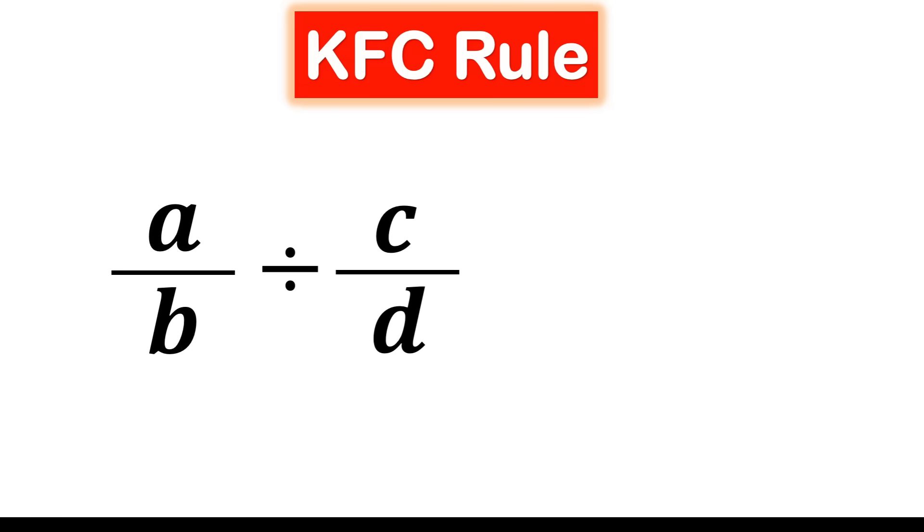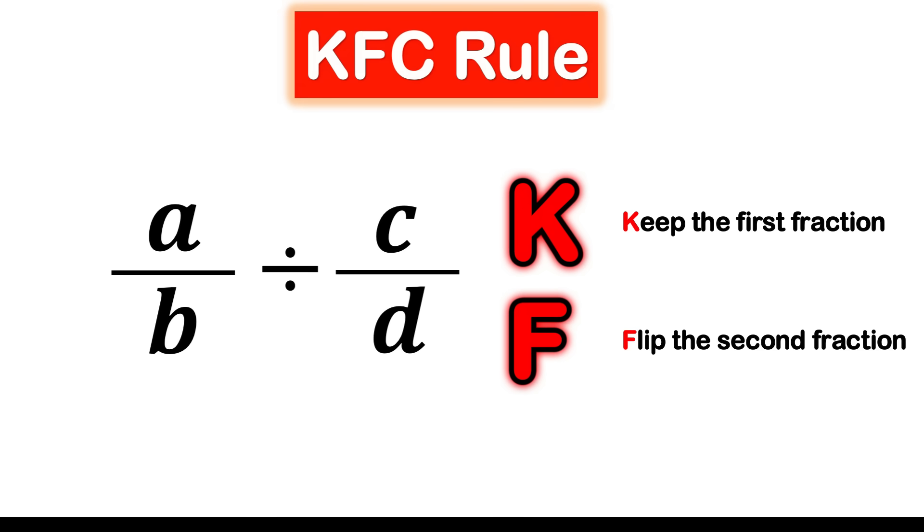KFC stands for three simple steps: K means keep the first fraction exactly as it is. F means flip the second fraction, turning it upside down. And finally, C means change the division sign to multiplication. That's all there is to it. This rule transforms division into multiplication, making everything easier and consistent.